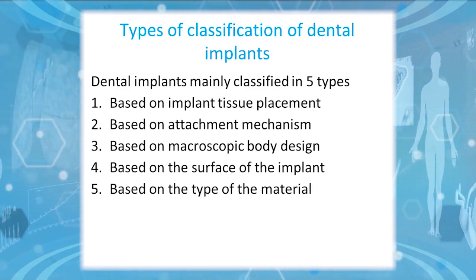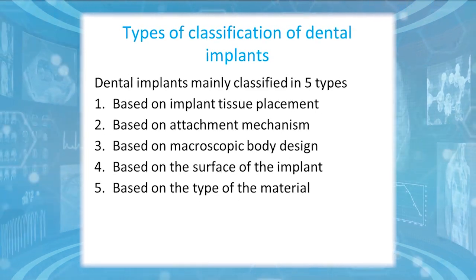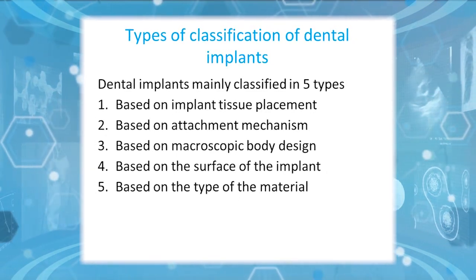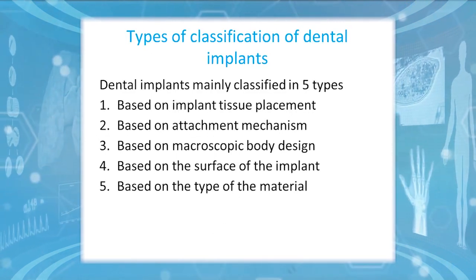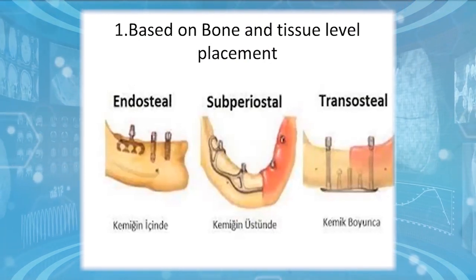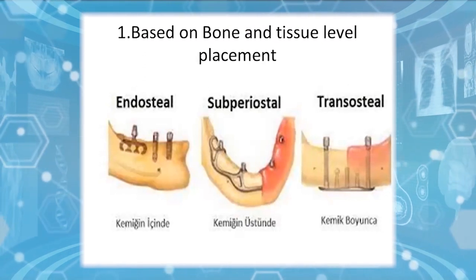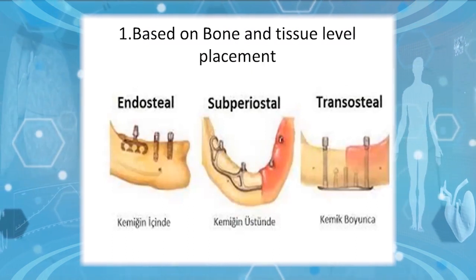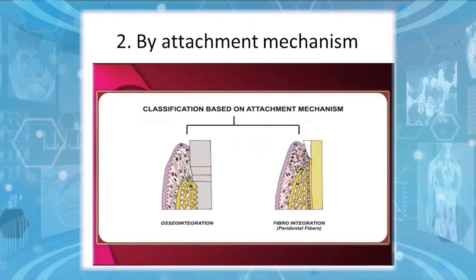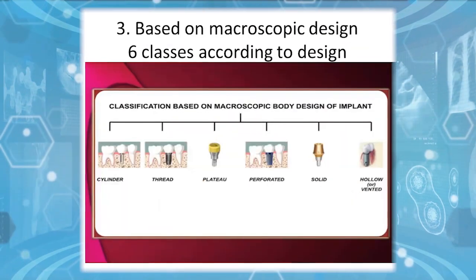Dental implants are mainly classified into five types. First, based on implant tissue placement. Second, based on the attachment mechanism. Third, based on macroscopic body design. Fourth, based on the surface of the implant. Fifth, based on the type of material. Based on bone and tissue level placement, we have three subtypes: endosteal, subperiosteal, and transosteal implants. Based on attachment mechanism, we have osseointegration and fibrous integration.